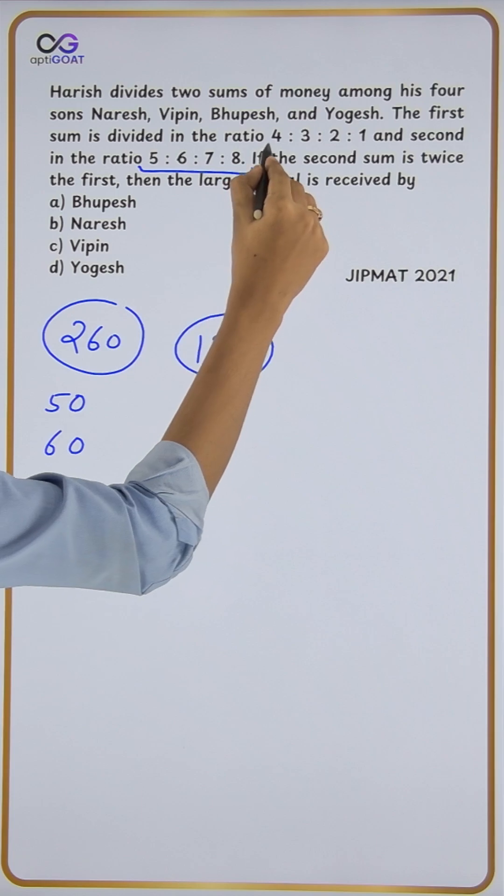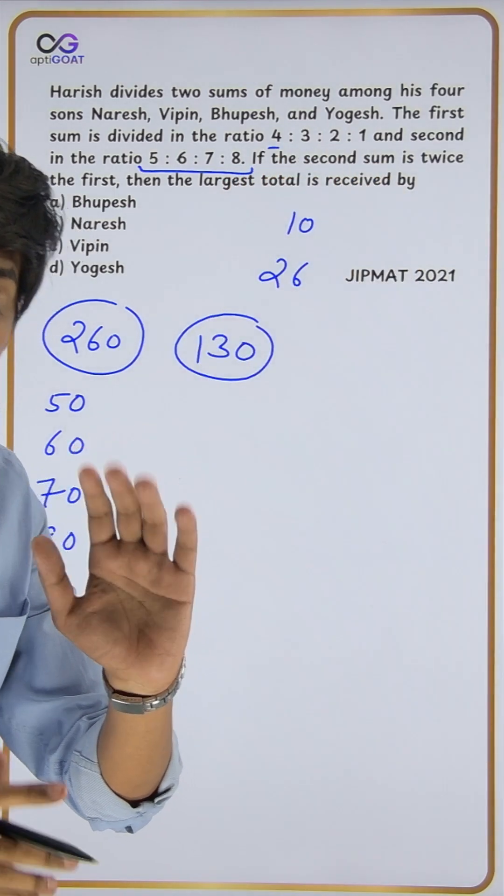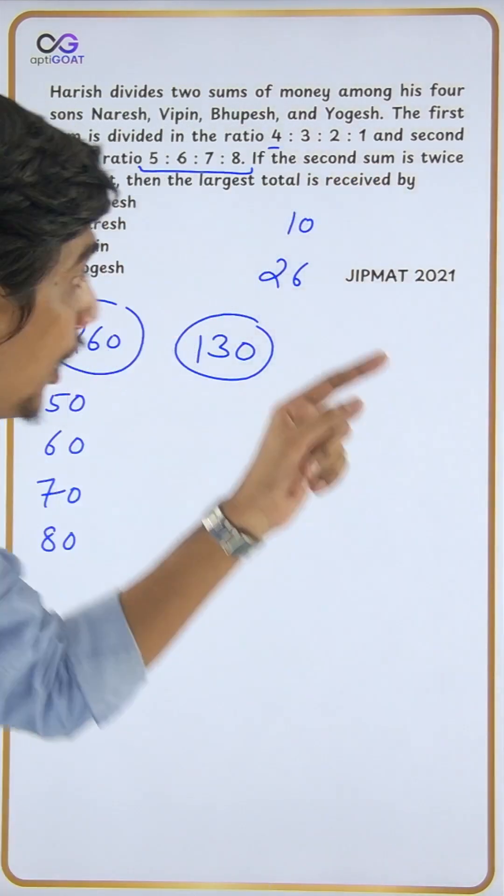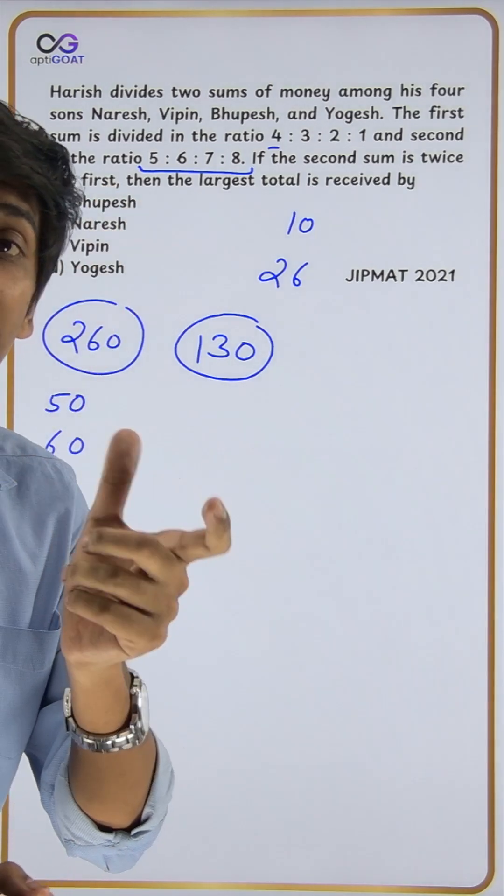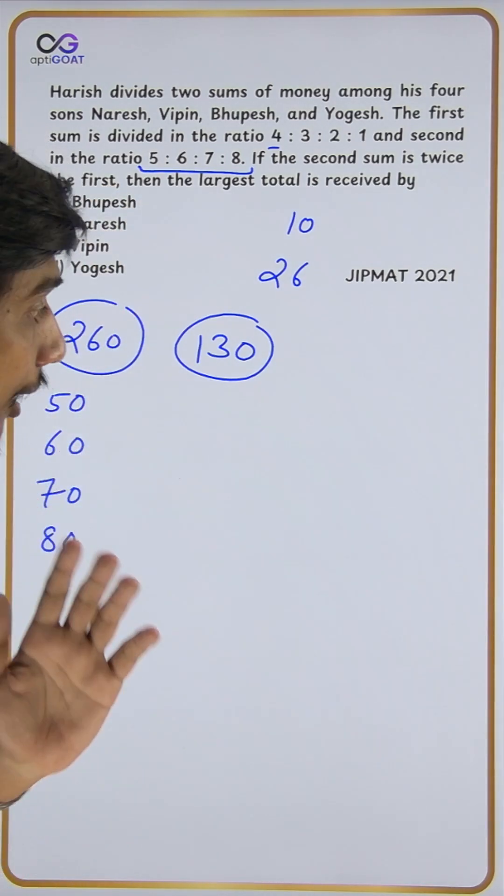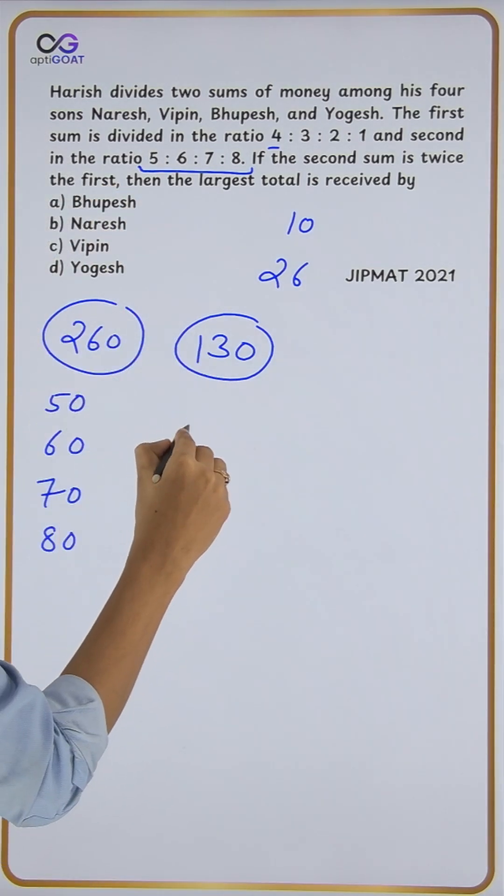For 130, 4 out of 10 is 40%. The first person's ratio is 4, total is 10 (4+3+2+1), so 40% of 130 is 52.